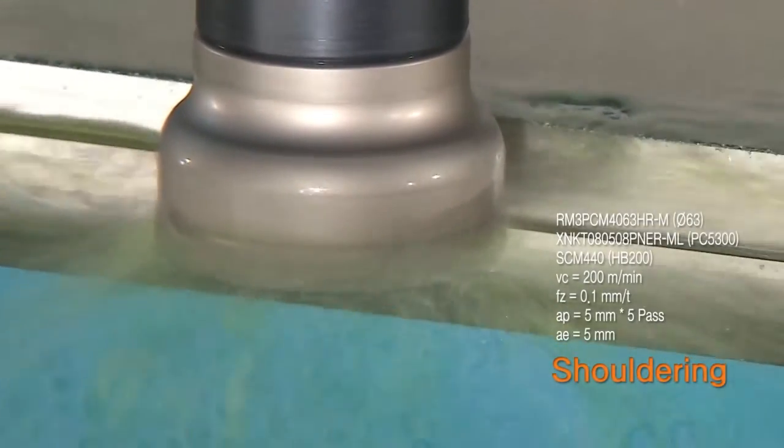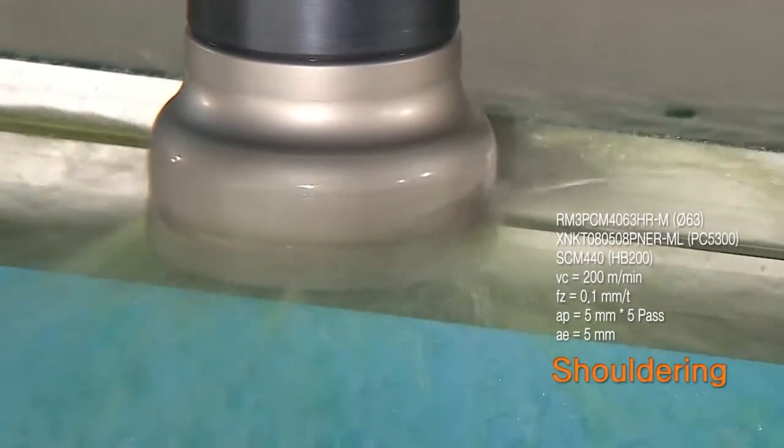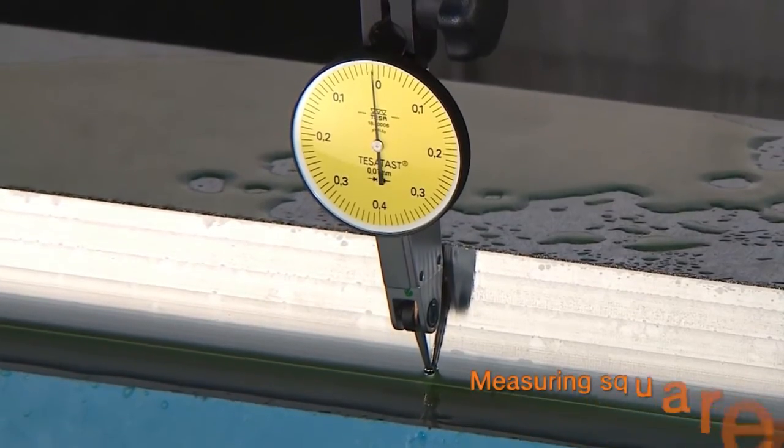RM3 is a multipurpose tool which can be used for shouldering, facing, ramping and helical machining.